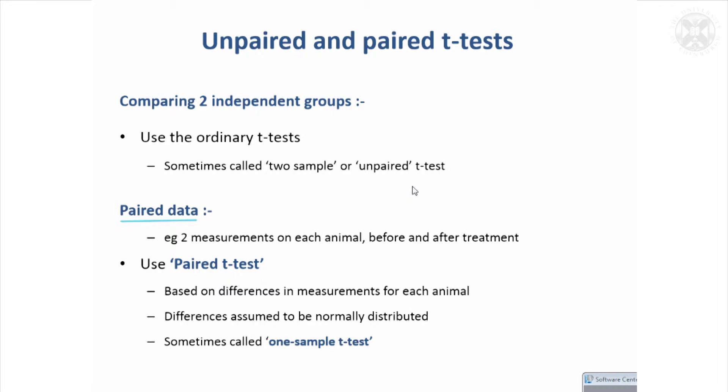For example, if you were doing an experiment on animals and you took a measurement before treatment and then after treatment, you might expect the measurements to be related in some way. We describe that as paired data - measurements taken on the same animal. There's an equivalent test called a paired T test which is then more appropriate.